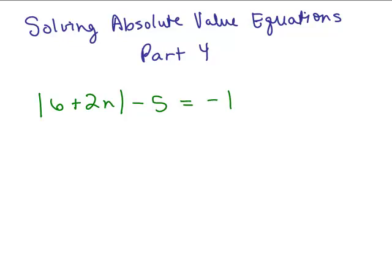You can't figure out what to do until you isolate the absolute value part. So I first need to add 5 to both sides. Some people might look and see there's a negative 1 on the other side and think there's no solution, but that's only if you have an absolute value by itself isolated equaling a negative number — so be careful. Adding 5 to both sides gives me the absolute value of 6 plus 2n equals positive 4, and now we have an absolute value equaling a positive number.